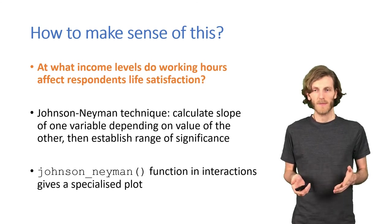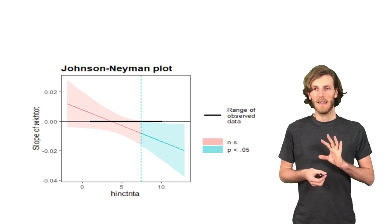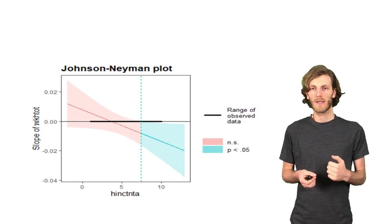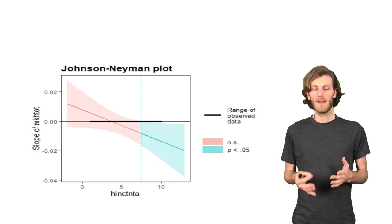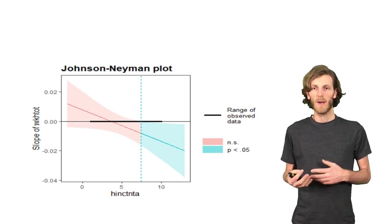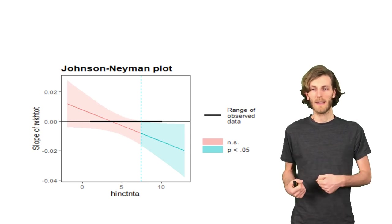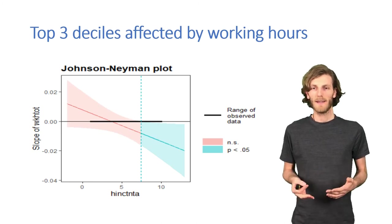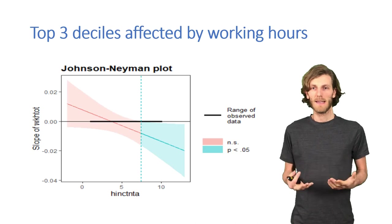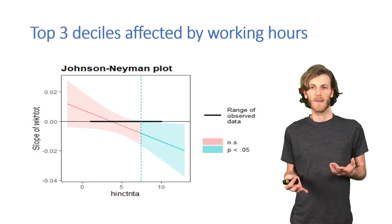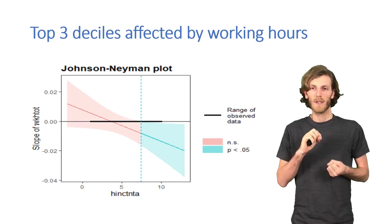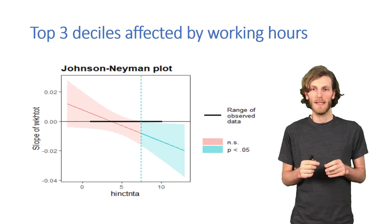So the Johnson-Neyman function can do that. And then we get this rather complex-looking plot that now plots the slope of working hours at all values of household income. But the main thing to just look at is where the blue line is. Because on one side, where we have the blue shading, we have a significant effect of working hours on life satisfaction. On the other side, we don't. So here we can see, in this particular data set, only the top three deciles, so the top 30% by income, are negatively affected by working hours.